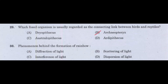10th question: What is the phenomenon behind the formation of a rainbow? This is a very, very important question. Option A: diffraction of light. Option B: scattering of light. Option C: interference of light. Option D: dispersion of light. Answer: Option D, dispersion of light.